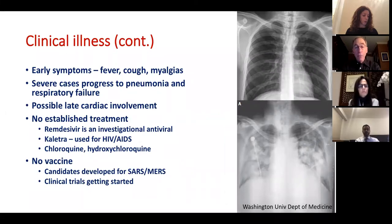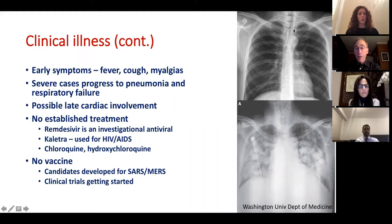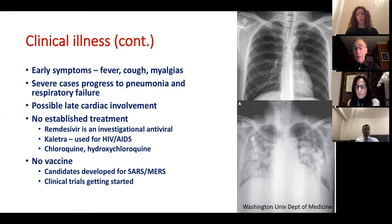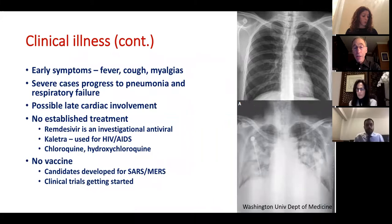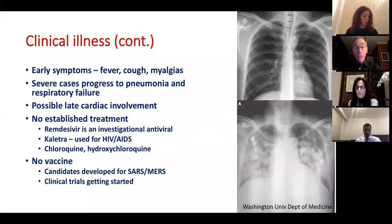Beyond early symptoms, there may also be involvement of the heart, especially late in the disease process. Chest X-rays show that in very severe cases, something very bad is happening in both lungs — a patient in that condition would likely be on mechanical ventilation or very close to it. People become unable to breathe and unable to get oxygen into their system; they require intubation and mechanical ventilation, which hopefully gets them through the disease, but unfortunately doesn't always.